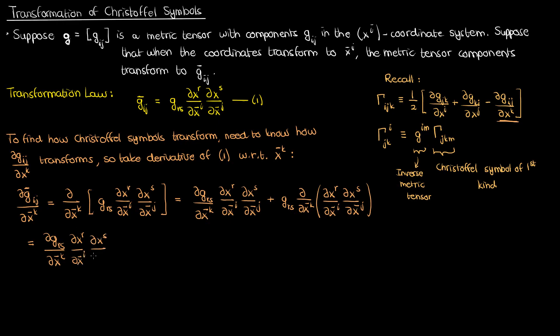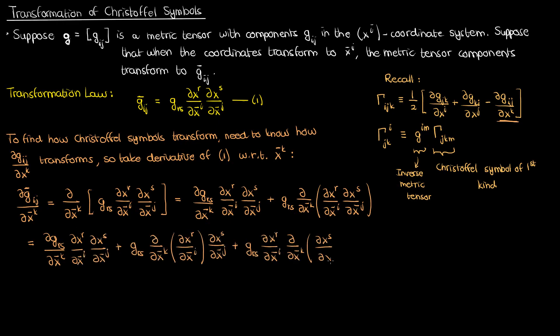Now I apply the product rule again to the second term on the right. If you want to find the derivative of g sub rs with respect to x super k bar and express that in terms of the derivative of an unbarred coordinate, you're going to have to use the chain rule.